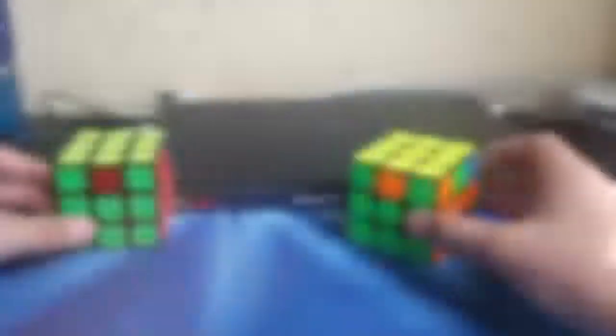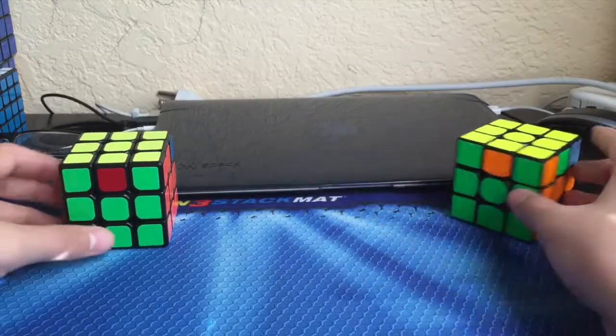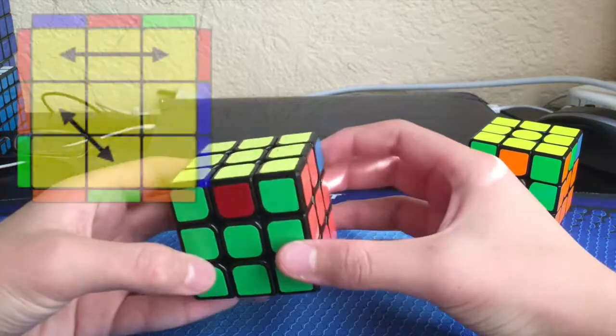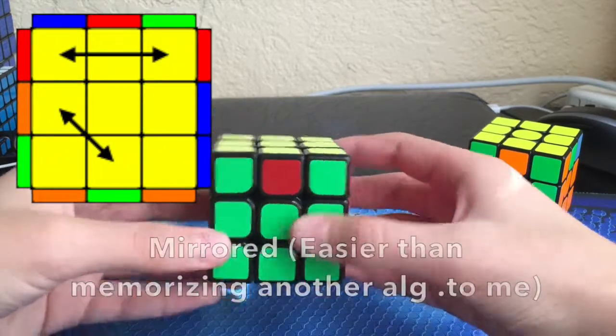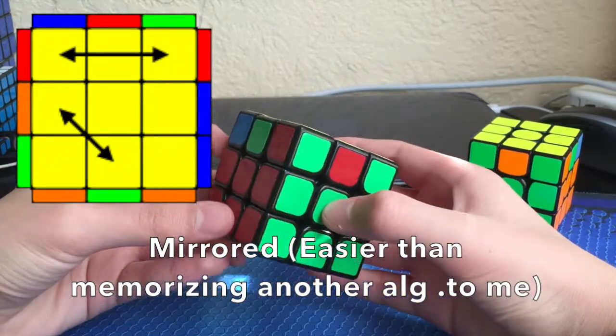Pretty easy to memorize. Once you have this on muscle memory, you can just do RA with the left hand, which is what I do personally, just like the J-perms.